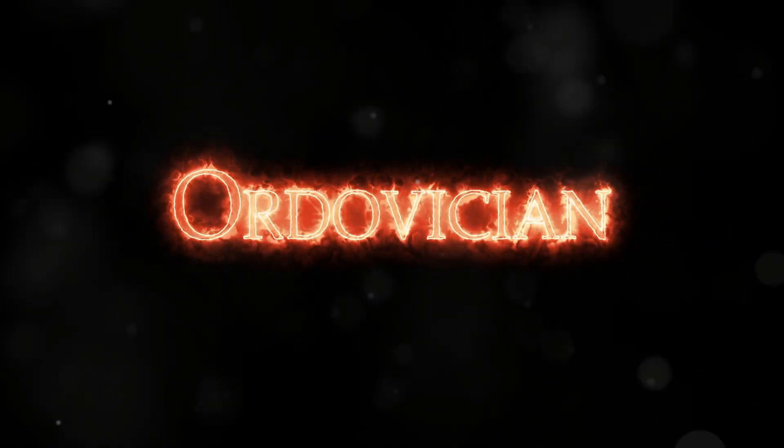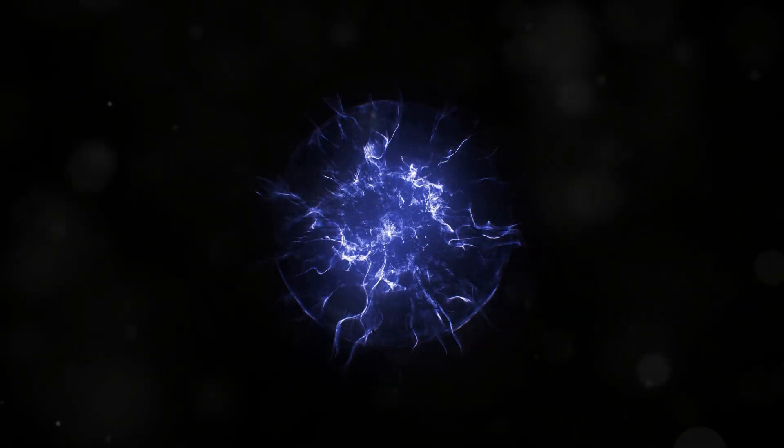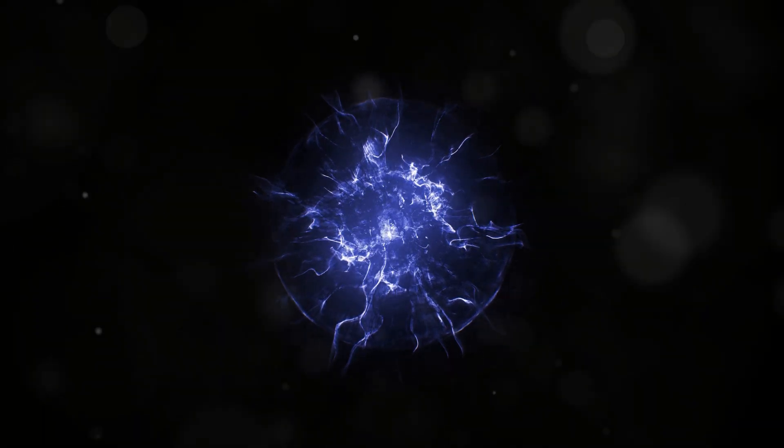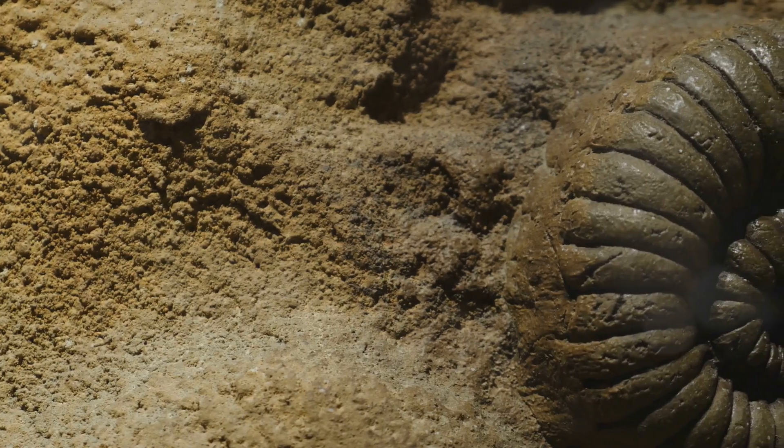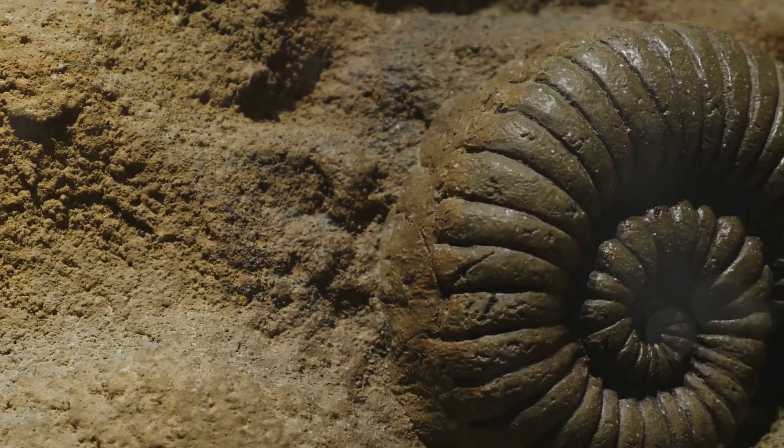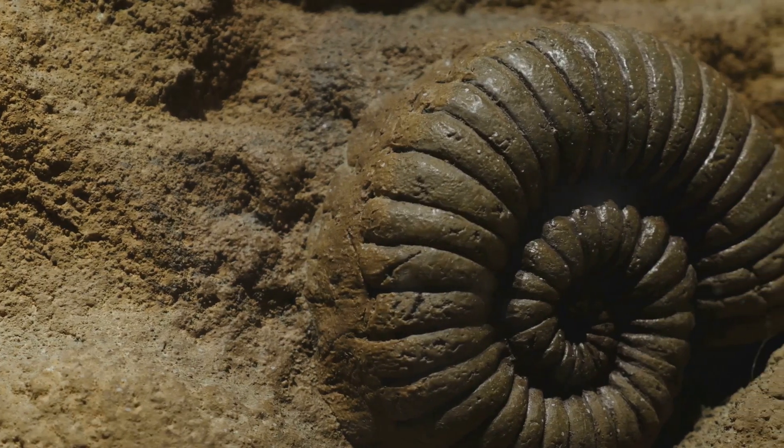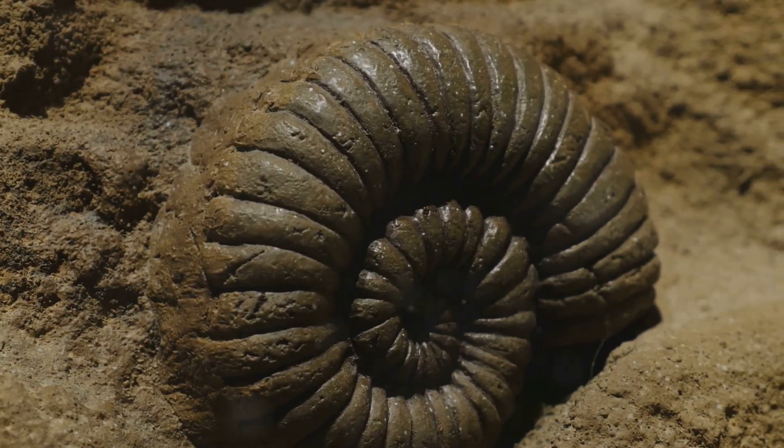The Ordovician extinction. Some scientists believe that a gamma ray burst may have caused a mass extinction on Earth millions of years ago. The Ordovician extinction, which happened about 440 million years ago, wiped out around 85% of all marine species.